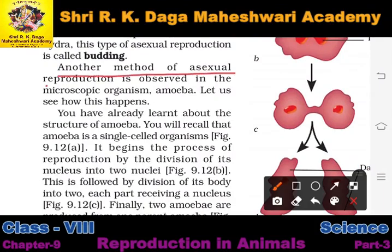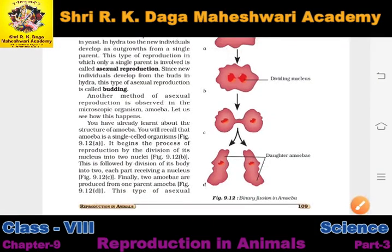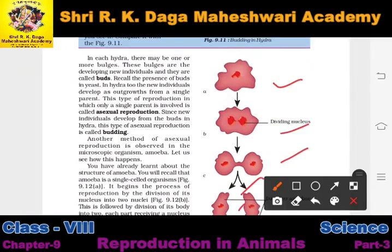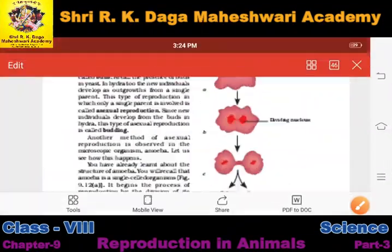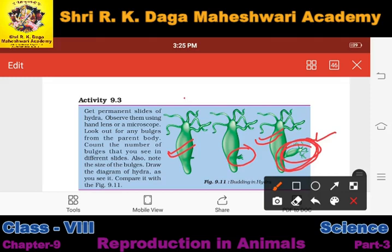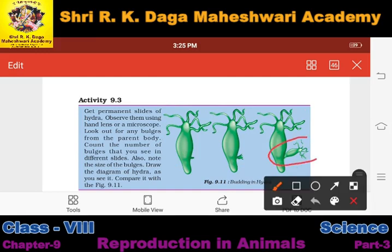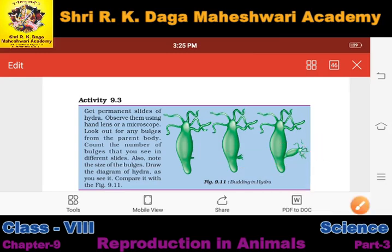Another method of asexual reproduction is observed in the microscopic organism amoeba. In hydra, reproduction occurs by budding: a bud forms on the hydra cell, slowly develops, and then detaches completely from the parent body, becoming a complete individual. This way, one hydra gives rise to two hydras — that is why it is called asexual reproduction, and this specific process is called budding. In amoeba, one cell divides into two, then two into four, then four into eight, and this process continues.